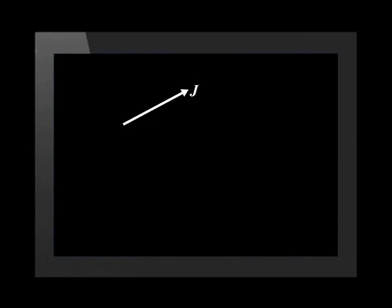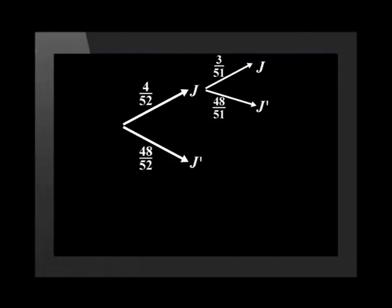It is important to keep this in mind as we draw the tree diagram. On the first draw, you can either get a jack or not. The probability of getting a jack is 4 out of 52, and the probability of not getting a jack is 48 out of 52, as there are 48 other cards besides the jacks. If you get a jack on the first draw, the probability of getting a jack on the second draw is 3 out of 51, and the probability of not getting a jack on the second draw is 48 out of 51. If you don't get a jack on the first draw, the probability of getting a jack on the second draw is 4 out of 51, and the probability of getting any other card is 47 out of 51. You can check the sum of probabilities on each pair of branches to make sure it equals 1.